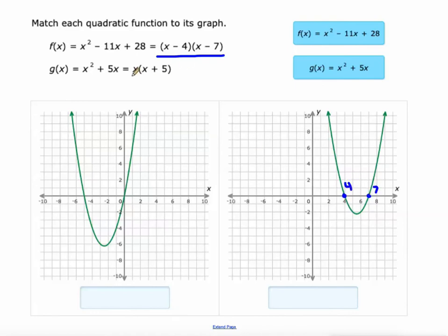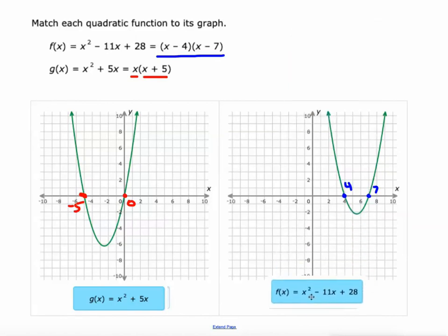As opposed to this one whose x-intercepts are 0 and negative 5. So that's going to help me in differentiating between these two. So g(x) had the x-intercepts at 0 and negative 5. f(x) had the x-intercepts at 4 and 7.